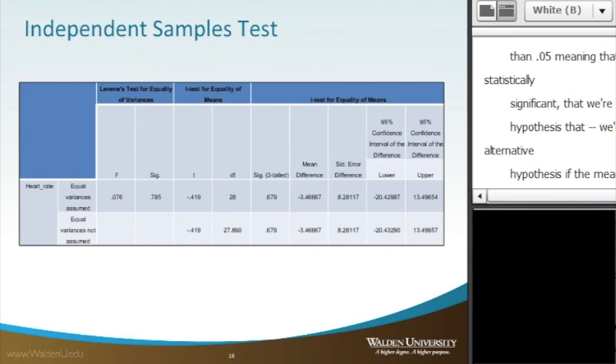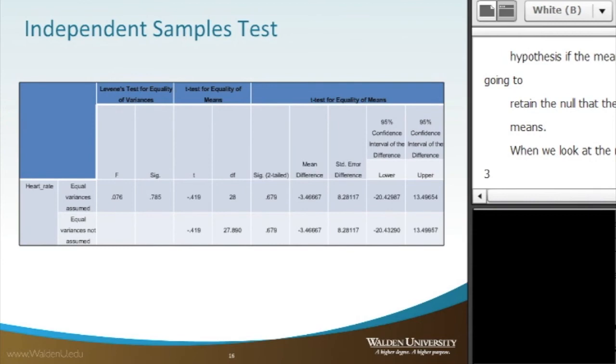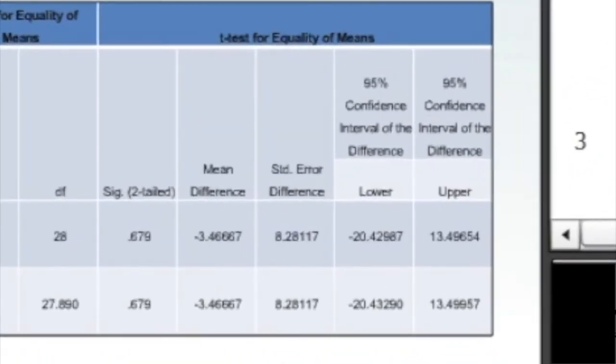When we look at the mean difference, it's negative 3.47, essentially 3.47. And if we look at the 95% confidence interval, the lower and the upper, those represent the confidence interval of the mean difference. And if we see that the lower value is negative 20 and the upper is 13, we can see that the confidence interval includes the value of zero.